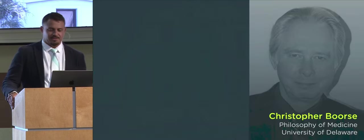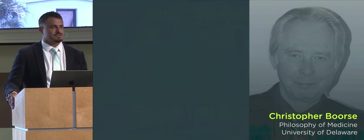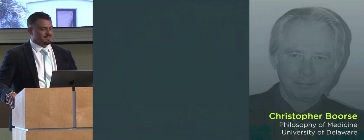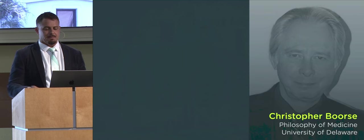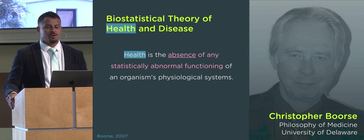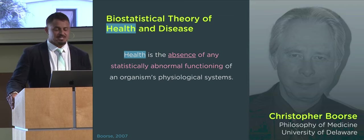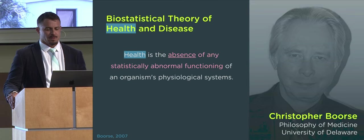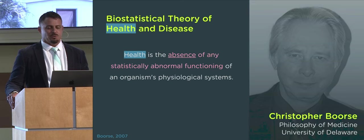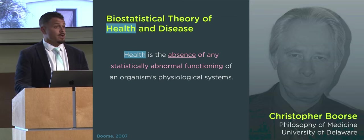To better understand health, I'd like to introduce philosopher Christopher Boers. Boers has made significant contributions to the philosophy of medicine. He is famous for his biostatistical theory of health and disease. According to his theory, health is the absence of any statistically abnormal functioning of an organism's physiological systems. A healthy individual is one whose physiological functioning falls within a range of what is considered statistically normal for their age, sex, race, and other relevant factors.